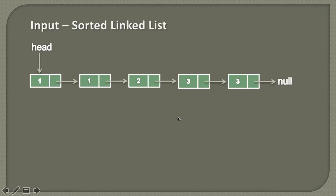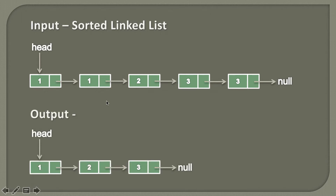Suppose we are given a sorted linked list. The linked list has five nodes having the data 1, 1, 2, 3, 3. This is a sorted linked list, but you can see that there are duplicates — one is duplicate and three is duplicate. We will discuss how to remove these duplicates, and the output would be 1, 2, 3 with all duplicates removed.